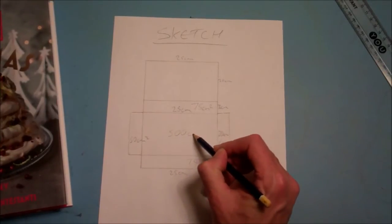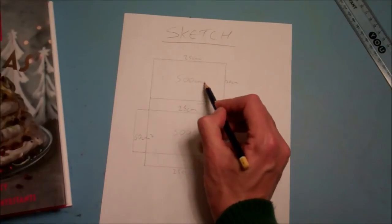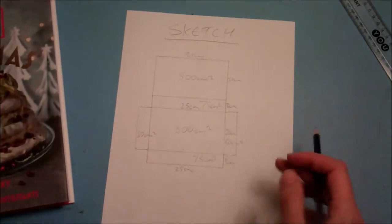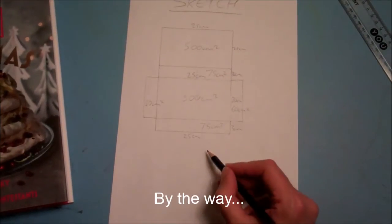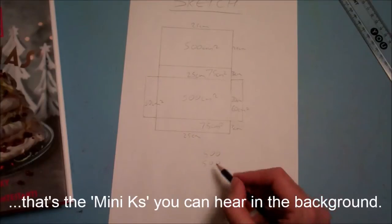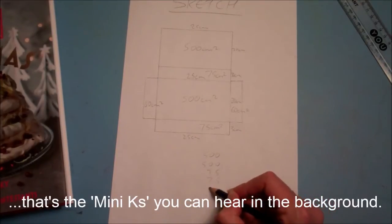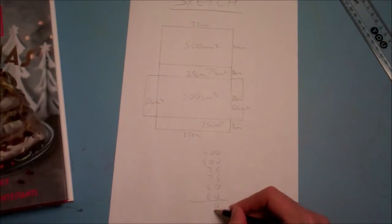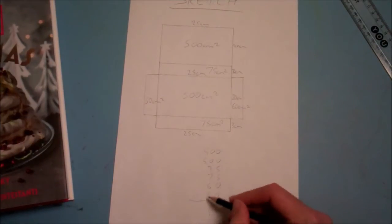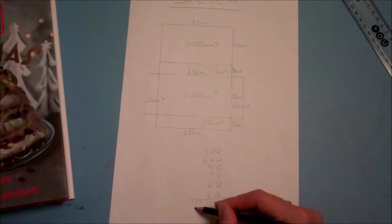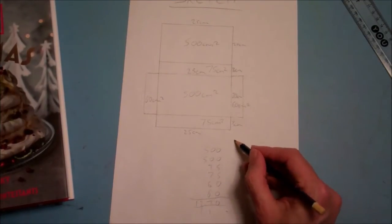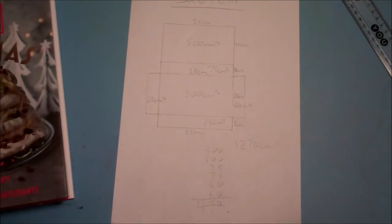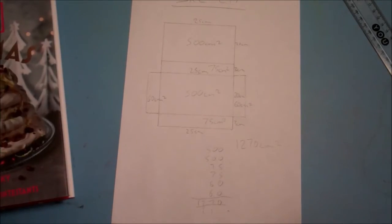So we've got 500, 500, 75, 75, 60, and 60, so 10, 14, 20, 27, 12, so surface area of the cuboid.